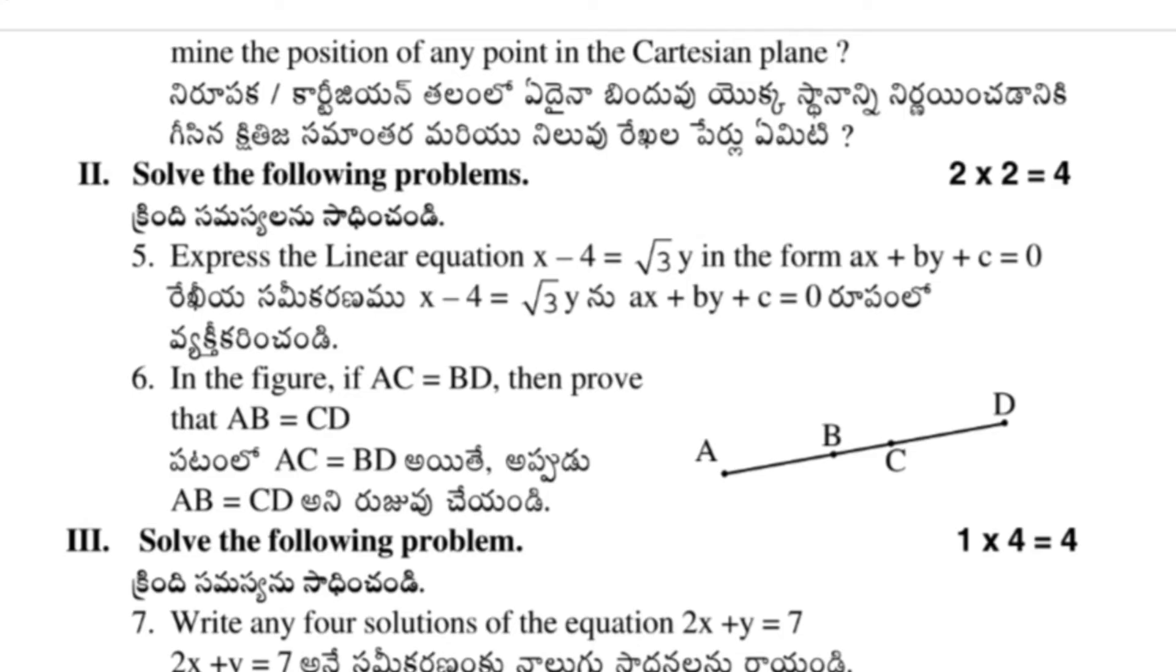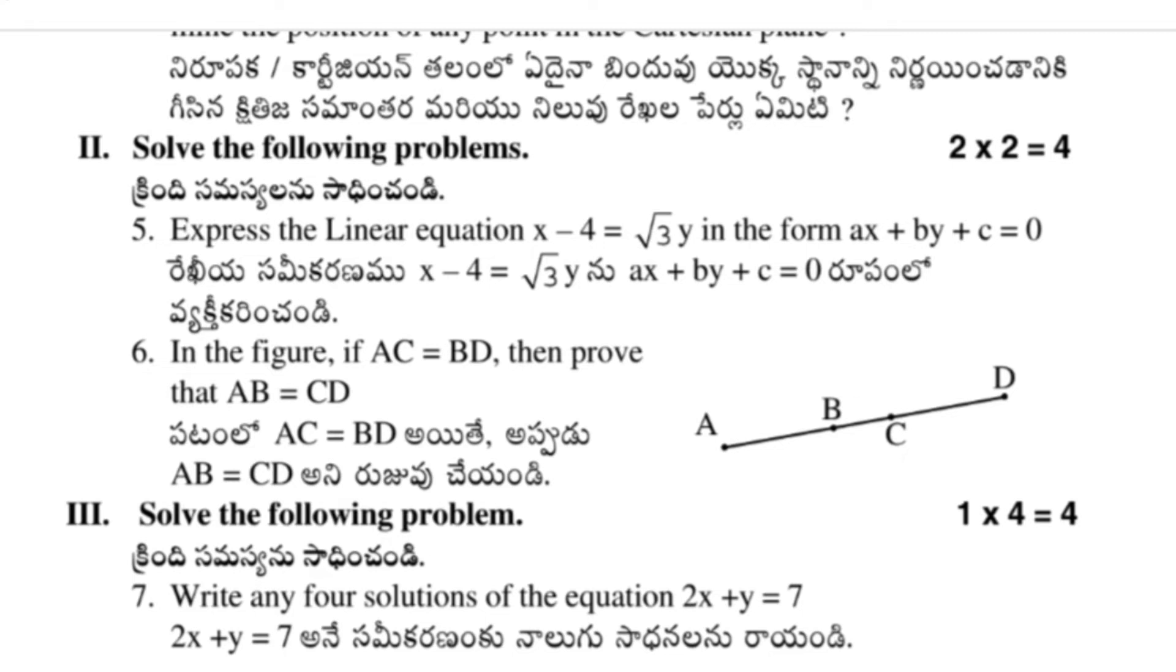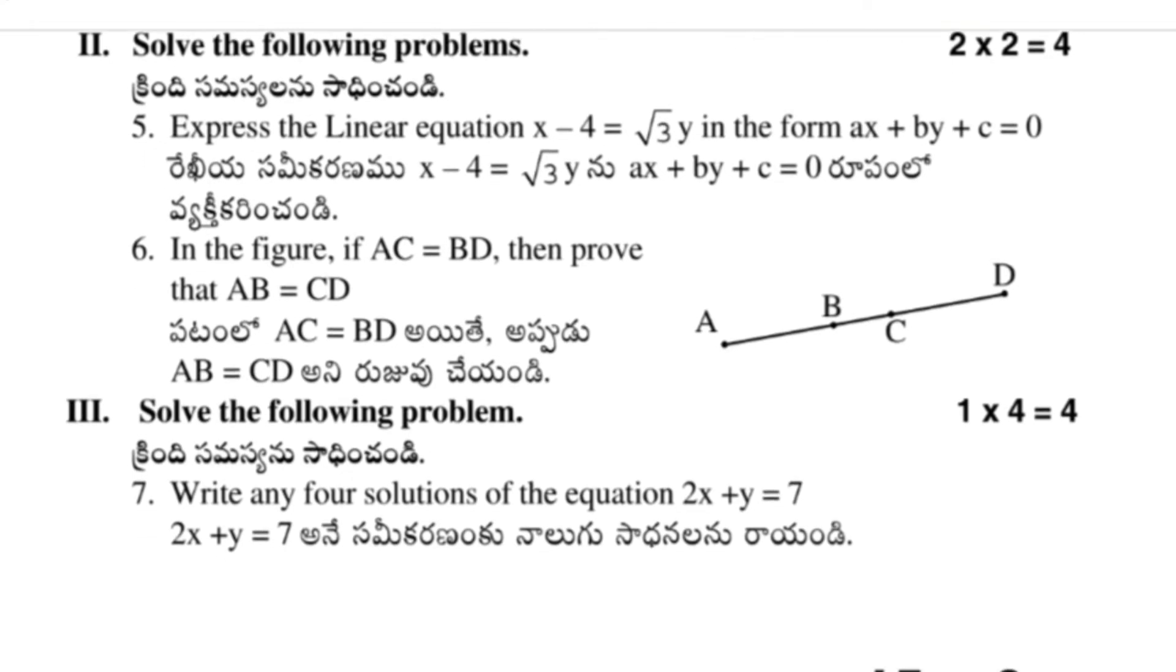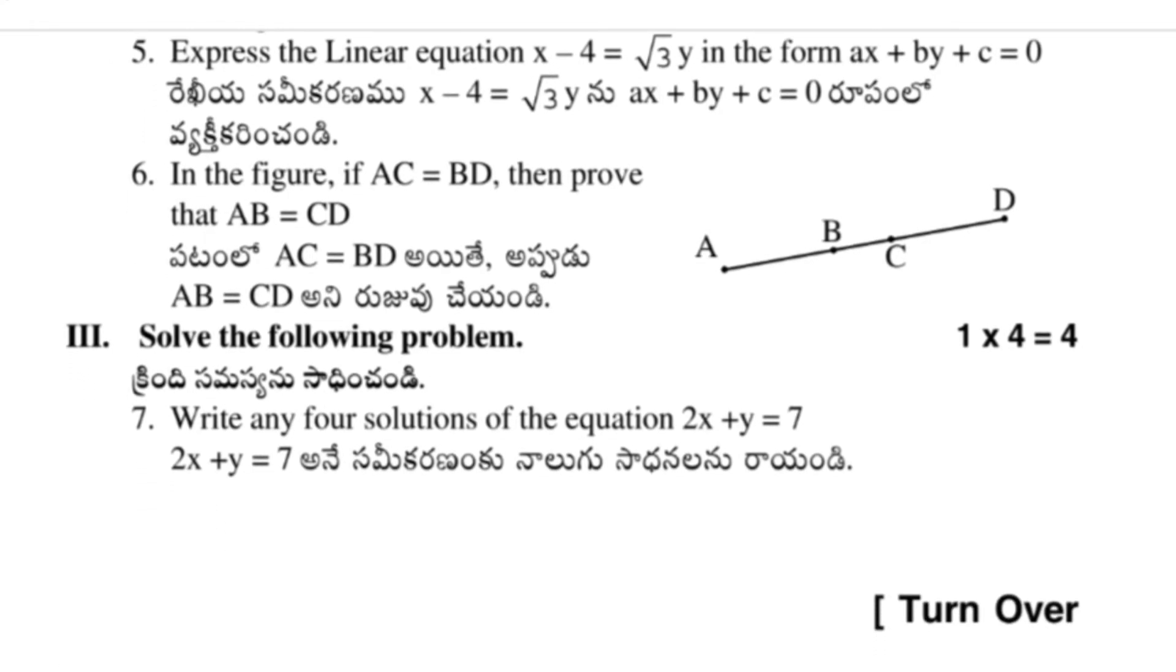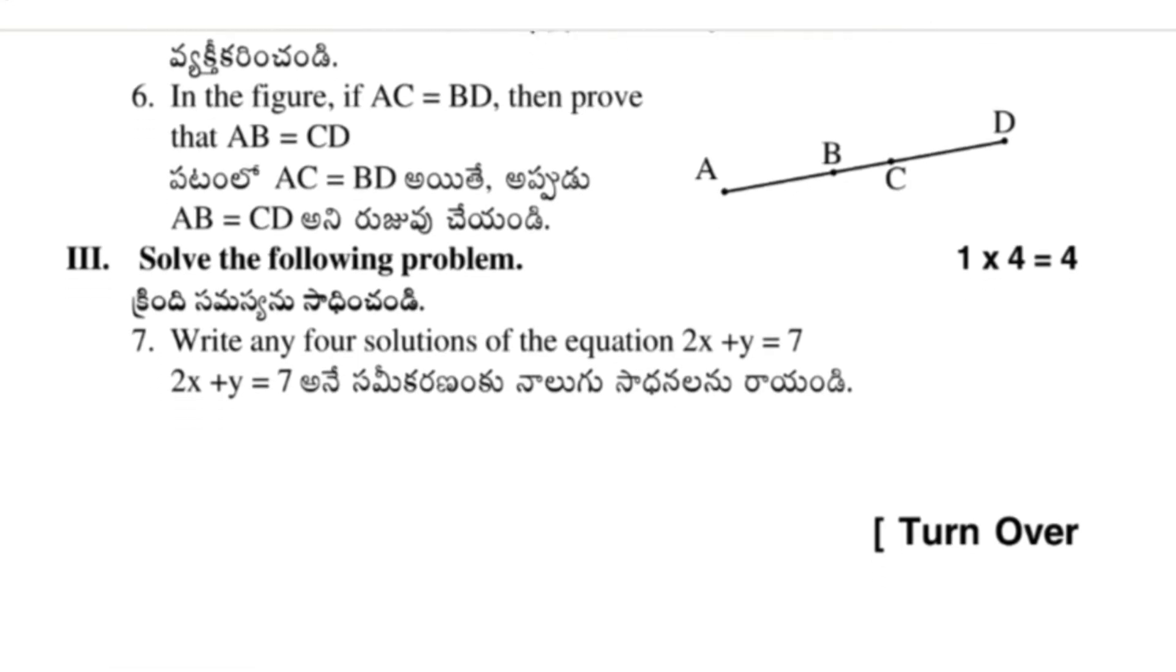Next we'll move to the third section. Here also, solve the following problems. One question is given in the third section, which is: write any four solutions for the equation 2x plus y equal to 7. This question carries four marks. We have to write down four solutions for the given equation.